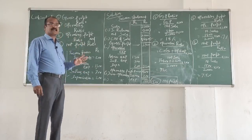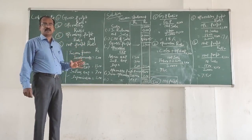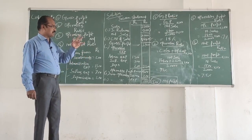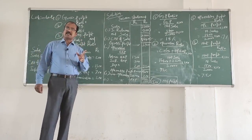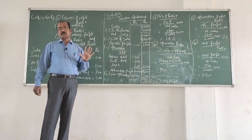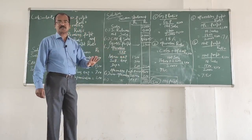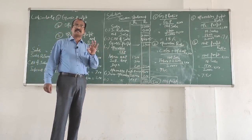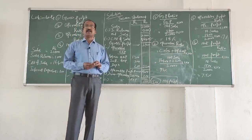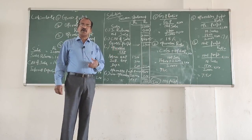I suggest learners watch this video a couple of times to gain better understanding of these four ratios. To recap: GP ratio shows the relationship between gross profit and sales; net profit ratio shows what percentage of net sales is net profit. I hope you have understood the calculation of these four ratios. Thanks for your time — bye for now, everyone.